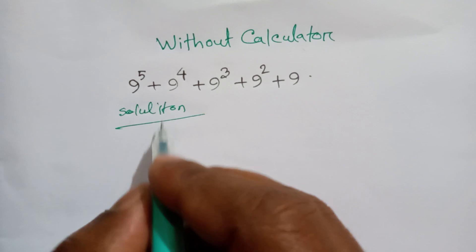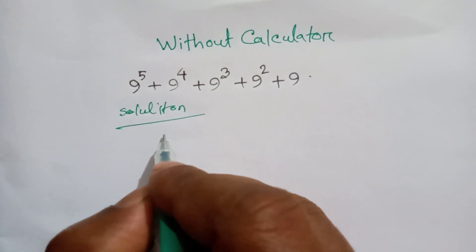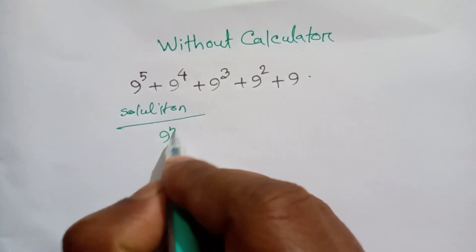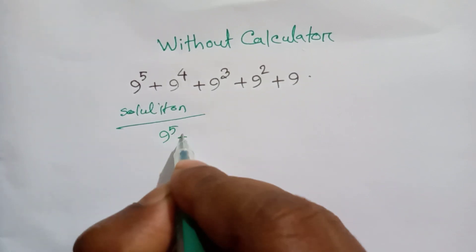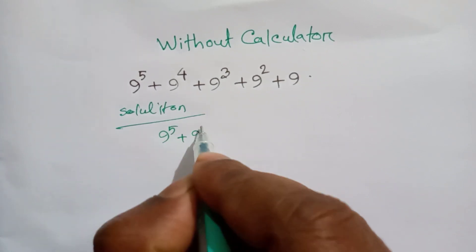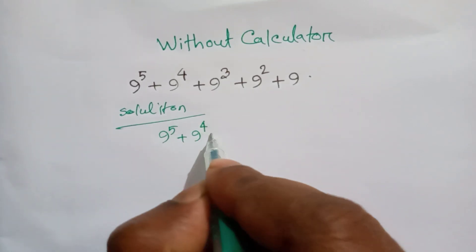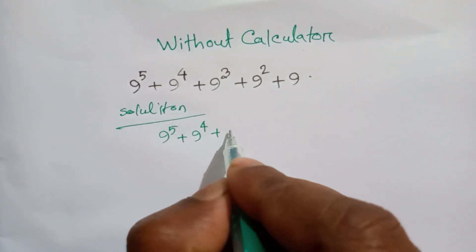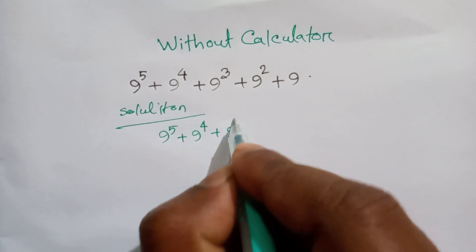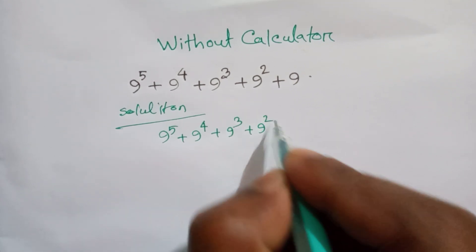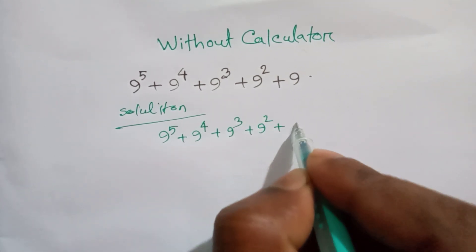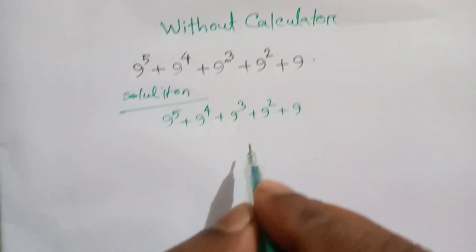We have 9 to the power 5, plus 9 to the power 4, plus 9 to the power 3, plus 9 squared, plus 9.